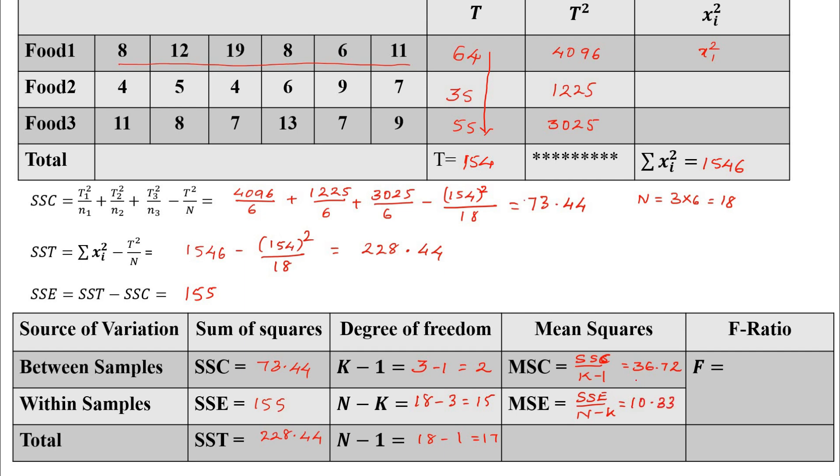I will observe which value is greater here. 36.72 is greater, that is MSC. Therefore, F ratio is given by the formula. Always in F ratio the numerator should be the highest value. MSC divided by MSE. Calculating this I am going to get the value 3.55.